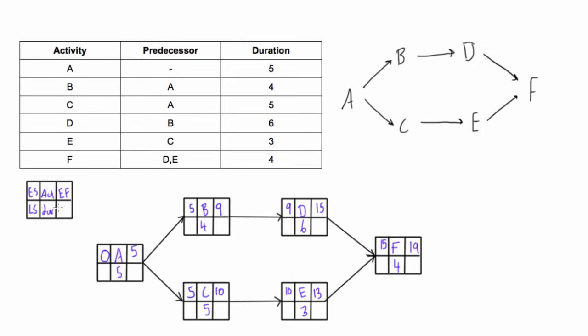We have the late start LS and LF for the late finish. The late start is the latest any given activity can start without increasing the duration of the entire project or delaying the end date of the project. The late finish is the latest any given activity can finish without delaying the end date of the project.